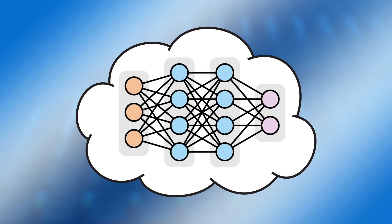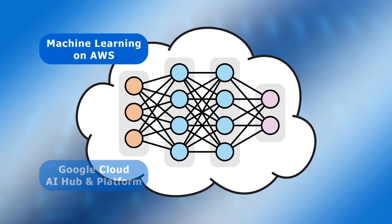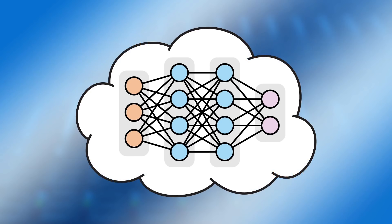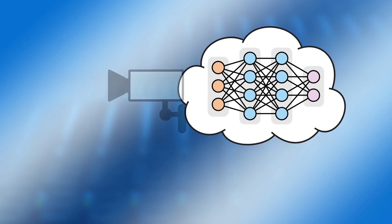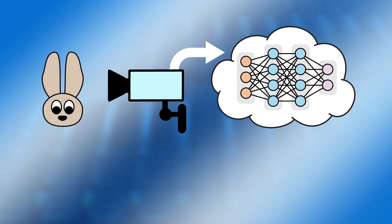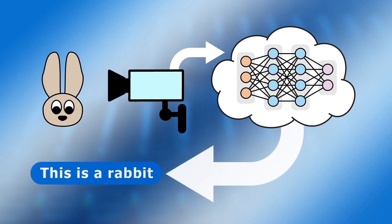Staying with our previous example, let's consider more deeply the application of artificial neural networks for vision recognition. Today, Amazon, Google, IBM, and Microsoft all offer cloud vision recognition services that can receive a still image or video feed and return a cognitive response. These cloud AI services rely on neural networks that have been pre-trained on data center servers. When an input is received, they then perform inference again on a cloud data center server to determine what the camera is looking at.